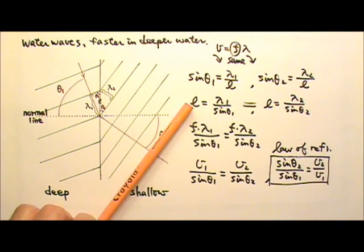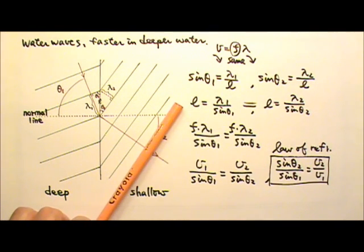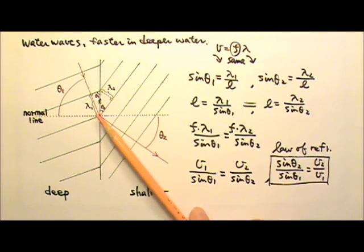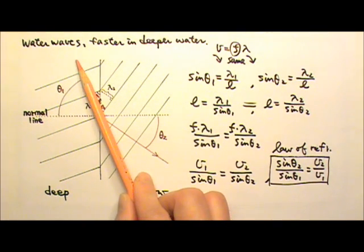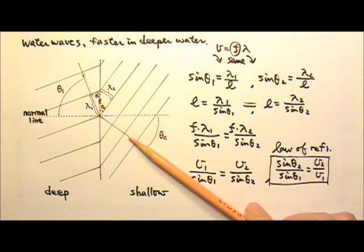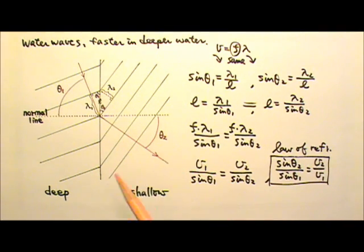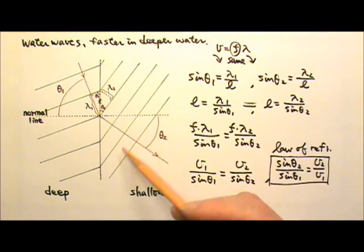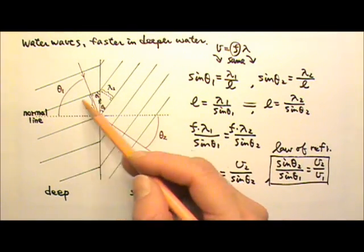If I create straight water waves on the shallow water side, the water waves would travel following this path and then bend that way exactly as shown over here. All we have to do is flip the direction of the rays, and the wave fronts will look exactly the same as this.